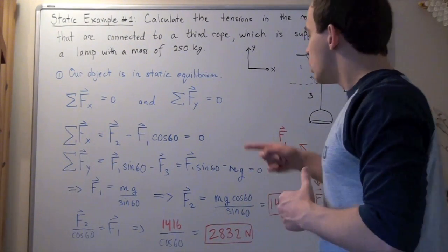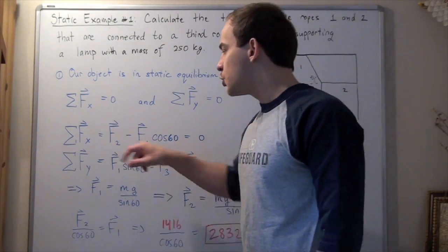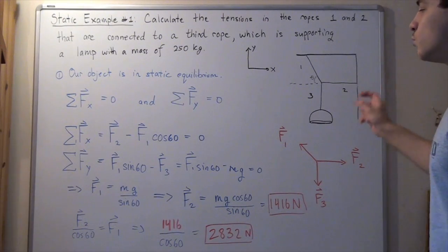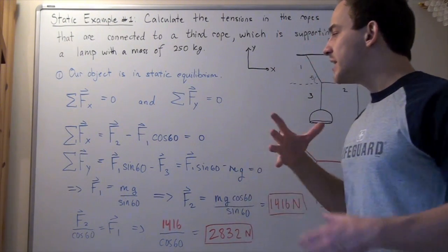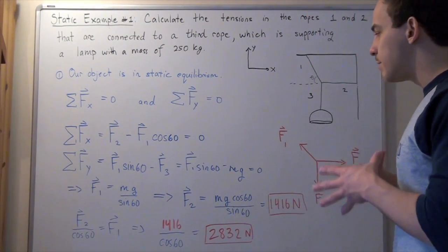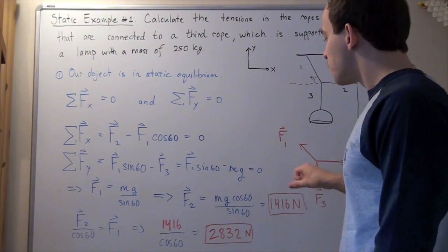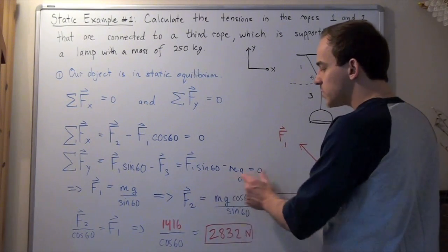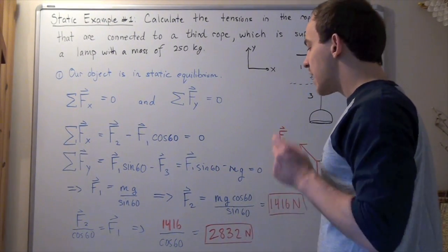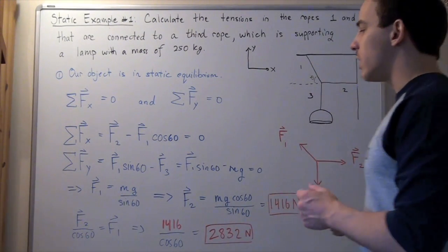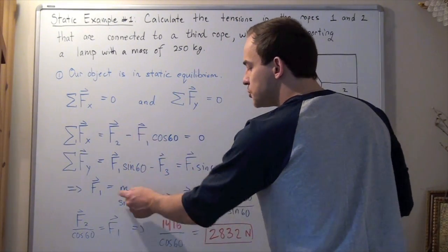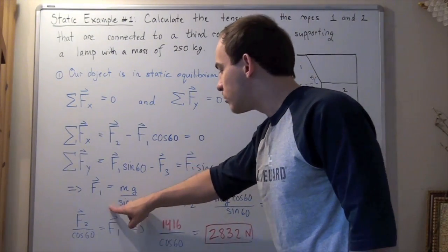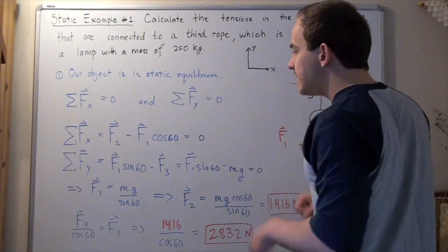We now have two equations and two unknowns — we don't know F one or F two, and that's exactly what we want to find. Since we have two equations and two unknowns, we can manipulate them to solve for both. From the y-direction equation: F one times sine 60 minus mg equals zero. Adding mg to both sides and dividing by sine 60 gives us F one equals m times g divided by sine 60. Plugging in the values gives us the tension in rope one.